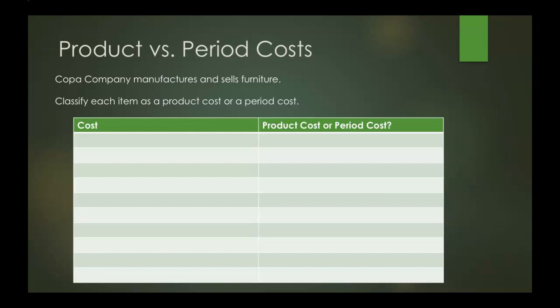If we take a look at this example, it tells us that Copa Company manufactures and sells furniture. We'll be given a list of costs and need to classify them as either a product cost or a period cost. The first one is advertising expenses. A product cost is anything inside the manufacturing process — well, advertising is outside, so that's going to be a period cost.